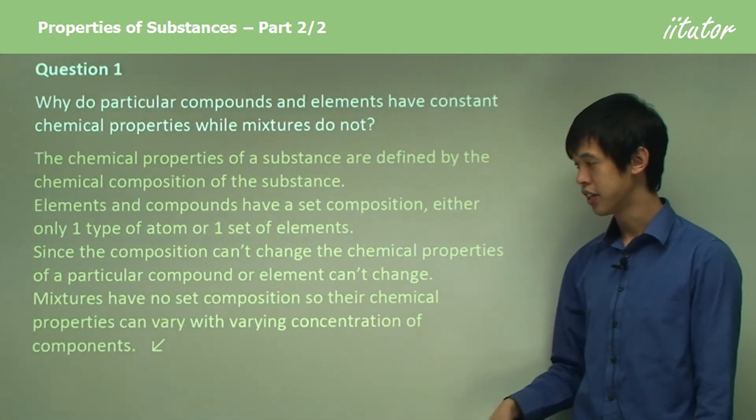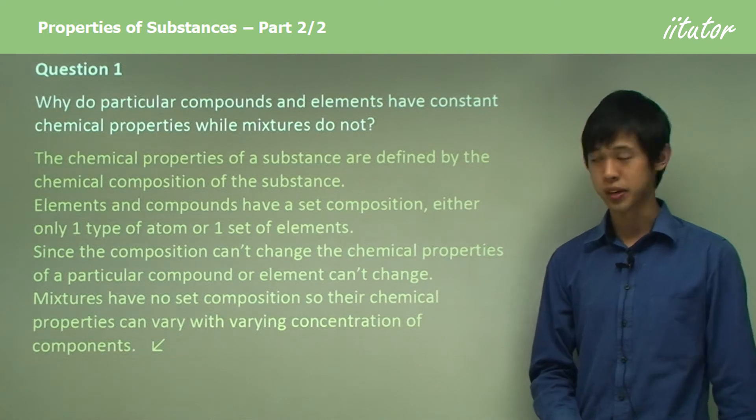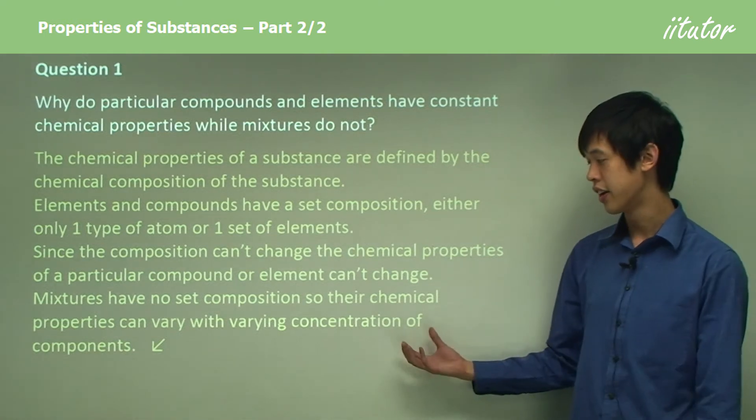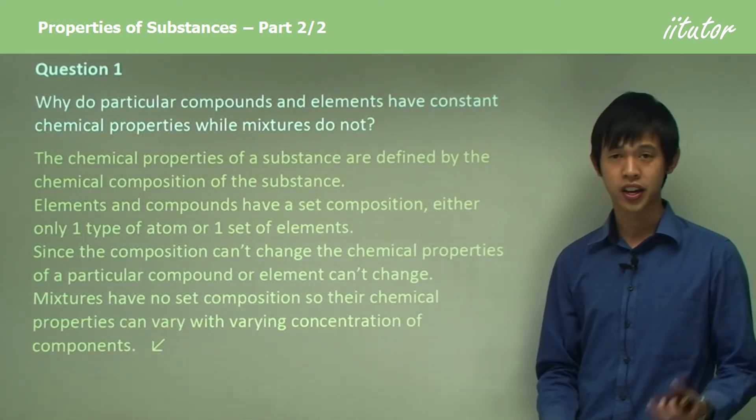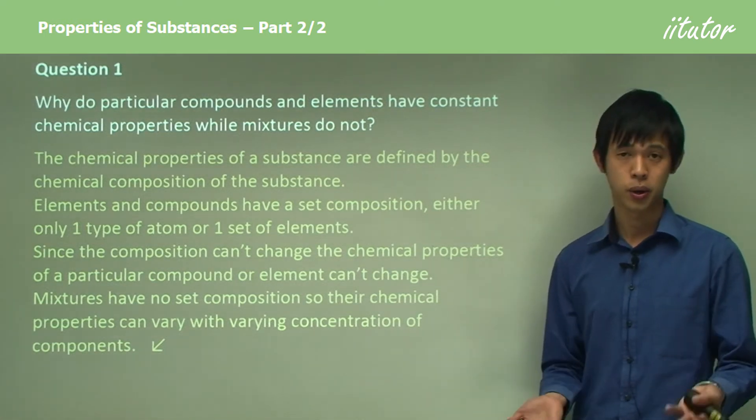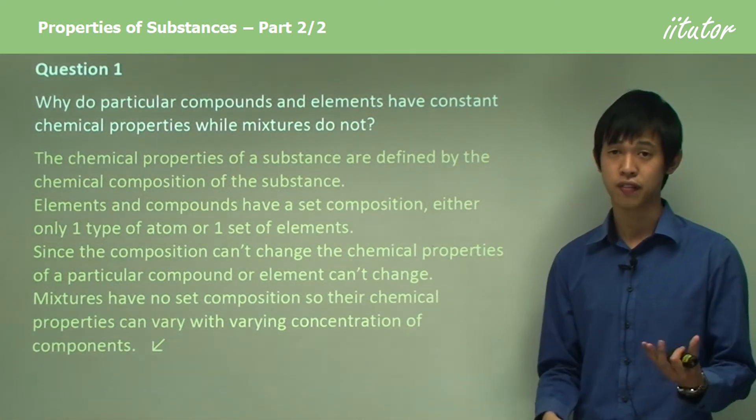Mixtures, however, don't have a set composition, so their chemical properties can actually vary with the varying concentration of components. That variance in composition gives you variance in their chemical properties as well.